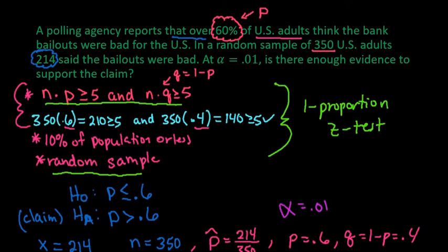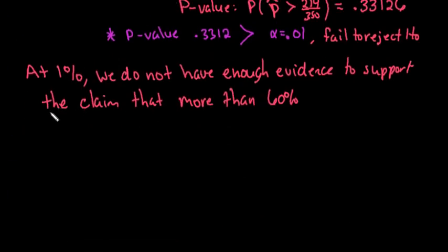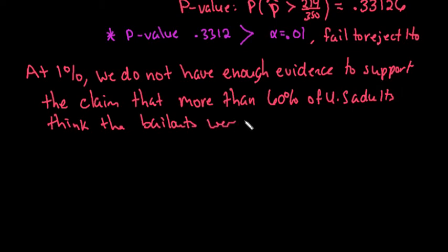If we go back up, it says the claim was a polling agency reports that over 60% of us adults think the bank bailouts were bad for the us. So we would just put that back down here. So the claim that more than 60% of us adults think the bank bailouts were bad for the us or are bad for the us.